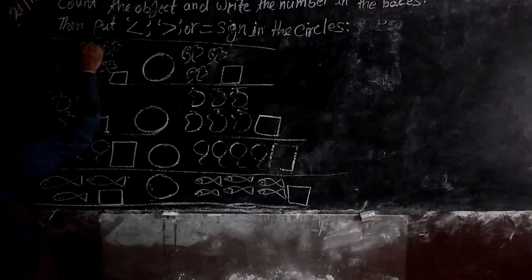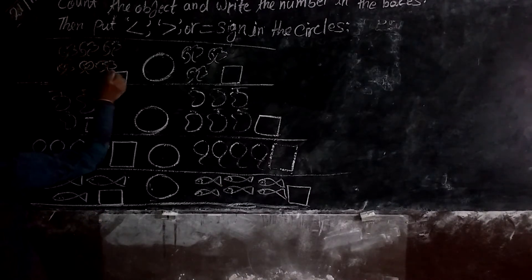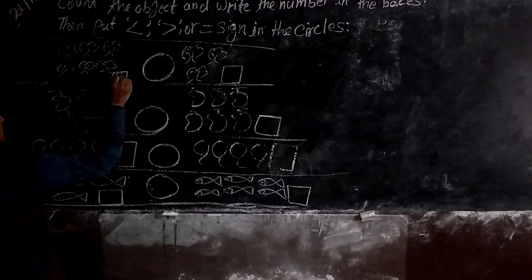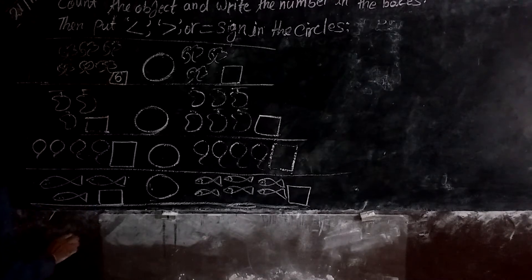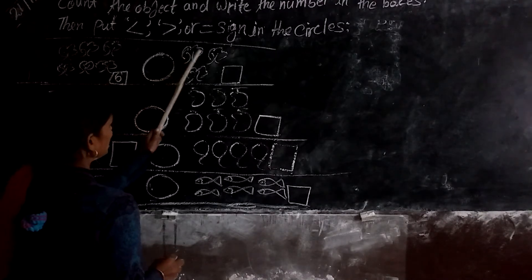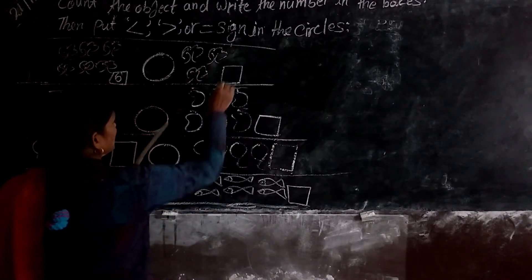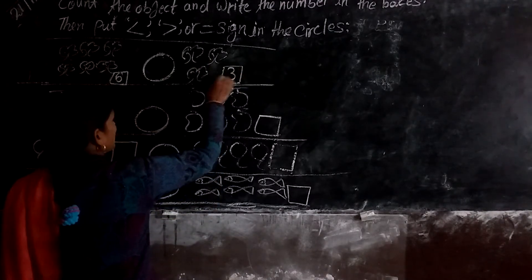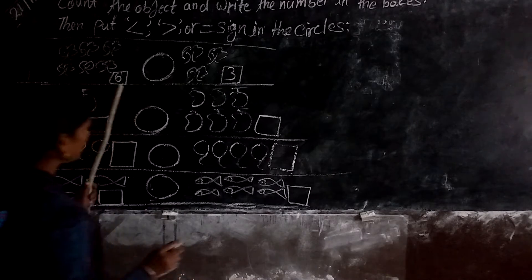One, two, three, four, five, six — you can write it. You can count and write: one, two, three, and then write it.